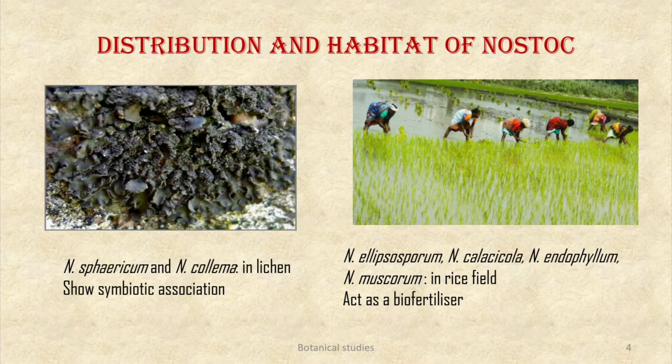Nostoc ellipsosporum, Nostoc calcicola, Nostoc endophyllum, and Nostoc muscorum are found in rice fields. With the help of the special cell heterocyst, Nostoc fixes atmospheric nitrogen. Therefore, Nostoc acts as a biofertilizer for rice fields.